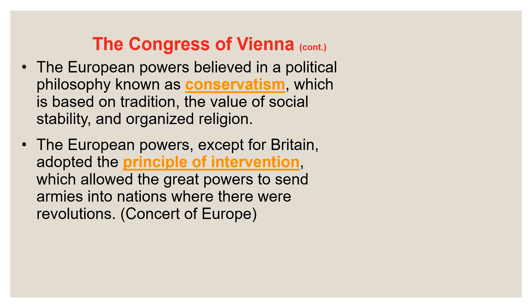The European powers believed in classical conservatism — different from modern-day conservatism. 18th- and 19th-century classical conservatism is the belief in absolute monarchy, privileged classes like the nobility, and certain untouchable privileges. This kind of classical conservatism is based in tradition, the value of social stability — meaning nobles at the top — and organized religion, whether Catholic clergy or in Protestant nations, religion being controlled by a conservative monarch.